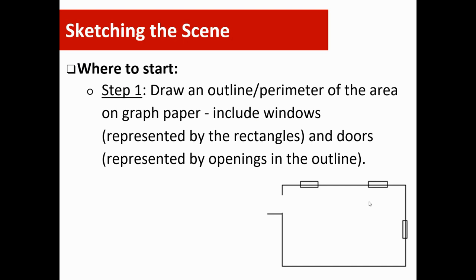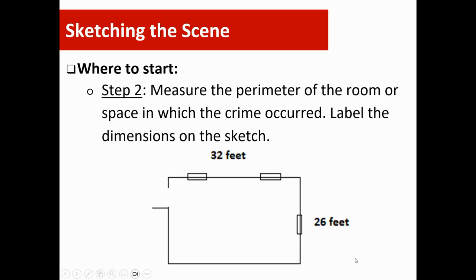Step one, start by drawing an outline or perimeter of the area on graph paper. Include windows, using these little rectangles, and doors are represented by openings in the outline. Step one is drawing the perimeter. Step two, measure the perimeter of the room and indicate those distances on your graph paper. This crime scene is 32 feet by 26 feet.